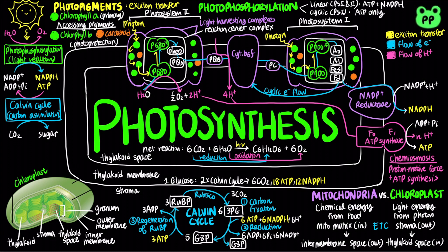Linear electron flow involves both Photosystem II and Photosystem I and generates both ATP and NADPH, whereas cyclic electron flow involves only Photosystem I and generates ATP but not NADPH. ATP and NADPH generated by photophosphorylation fuel the second stage of photosynthesis, known as the Calvin cycle, which involves the net conversion of 3 carbon dioxide into glyceraldehyde 3-phosphate, which can be converted to glucose through gluconeogenesis.